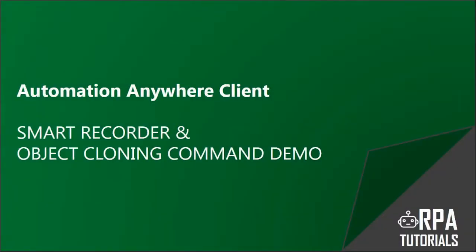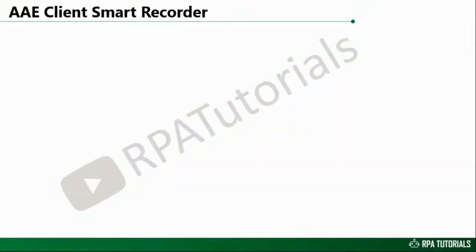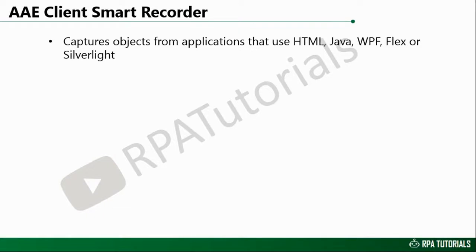Welcome to RPA Tutorials. In this video we will cover the Smart Recorder with a demonstration of how to use it and the Object Cloning command. At the time this video is created, the latest version of Automation Anywhere client is 10.7. Smart Recorder is used when you want to record a task or a series of actions on your computer while building tasks that require capturing objects from applications that use HTML, Java, WPF, Flex, or Silverlight.